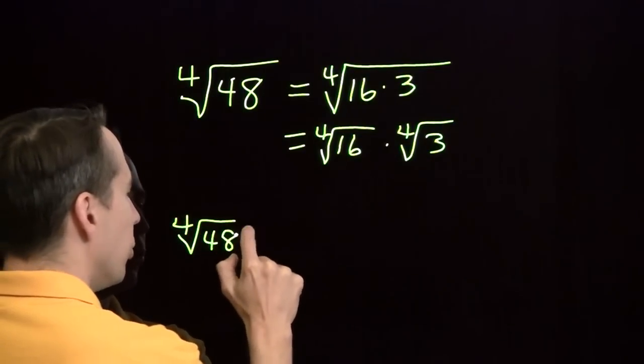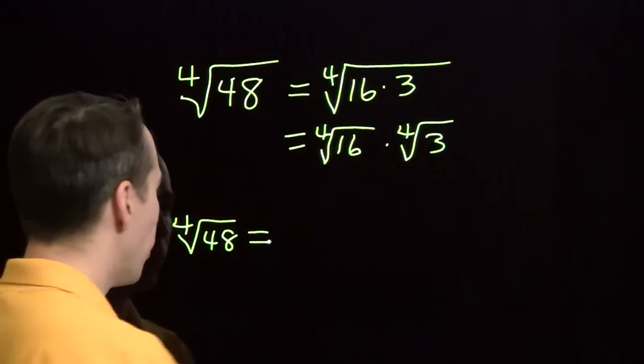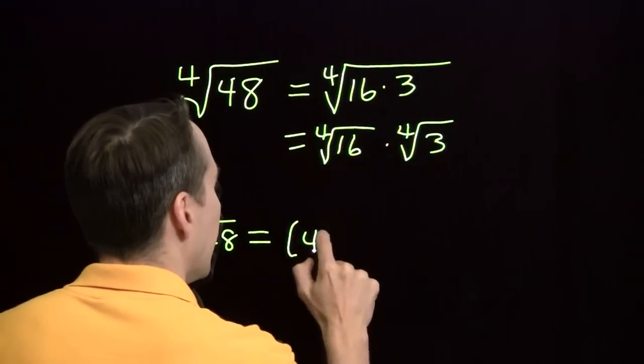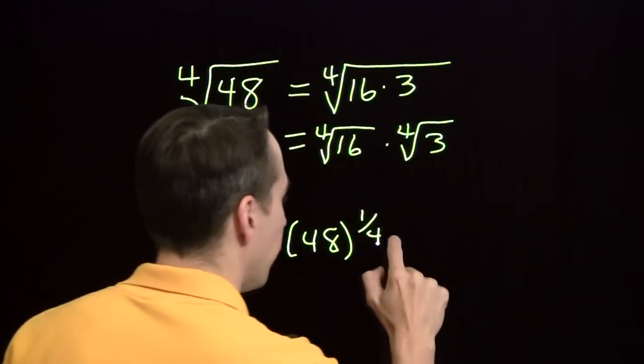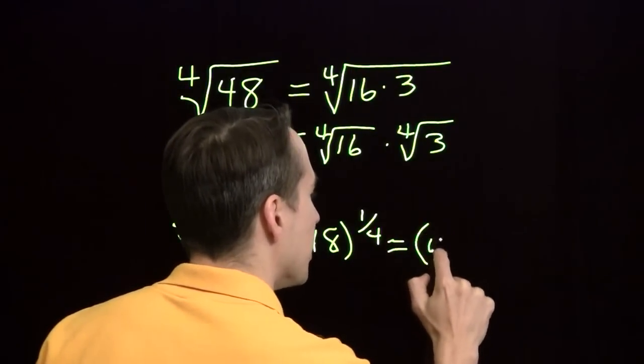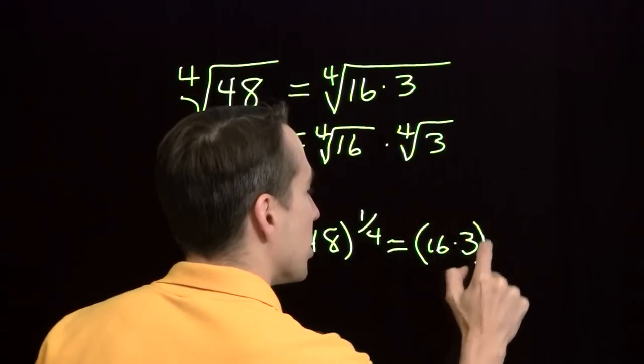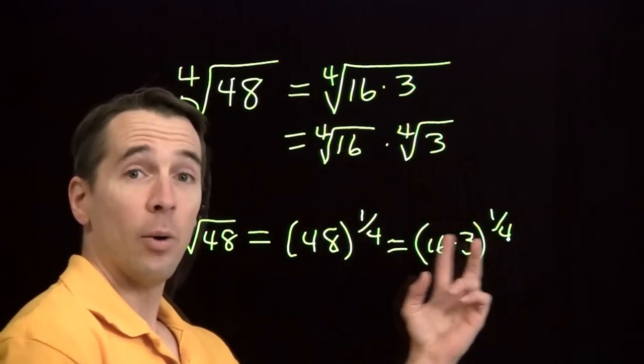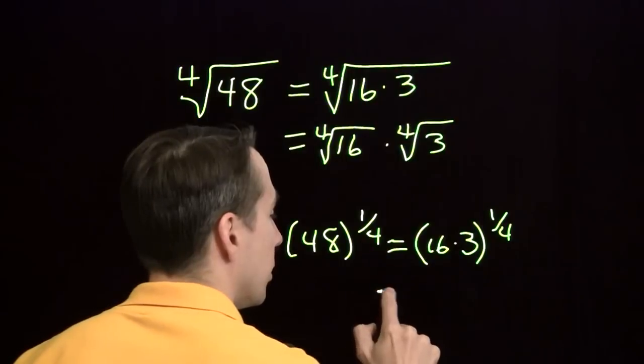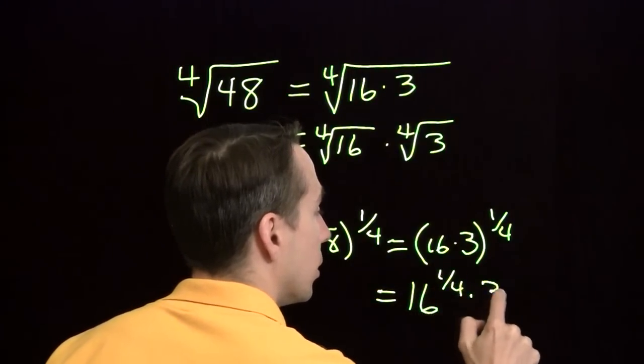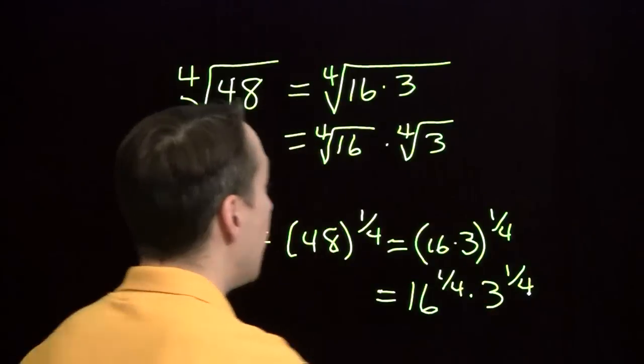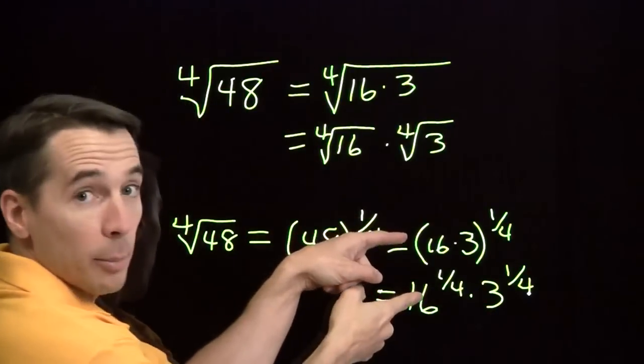Let's see why that works. What we're really doing here is we're using one of our exponent rules. I take the 4th root of 48. That's 48 to the 1 4th power. 48 to the 1 4th power. Now I can break this up as 16 times 3 to the 1 4th power. Now I have power of a product, and that's equal to a product of powers. And that's all we're doing up here, is this step right here. It's just an exponent rule.